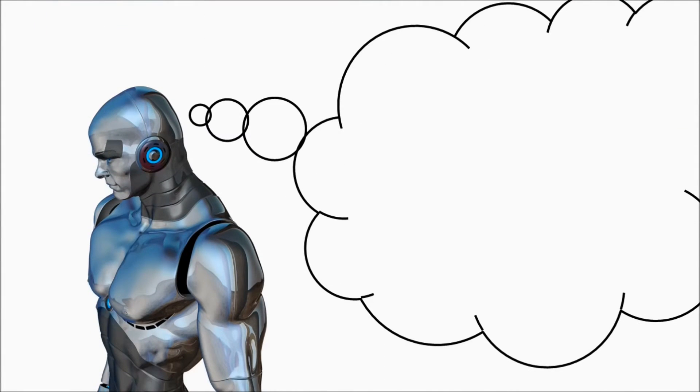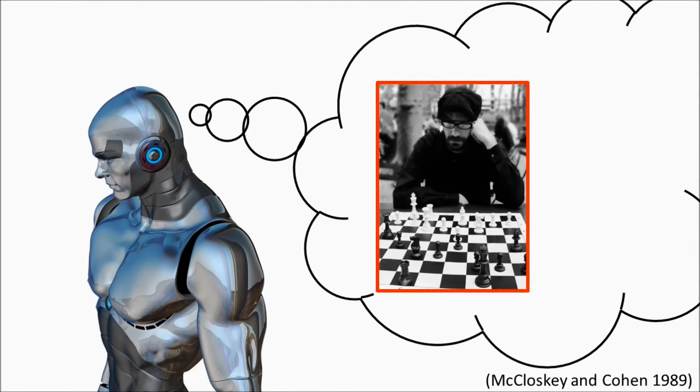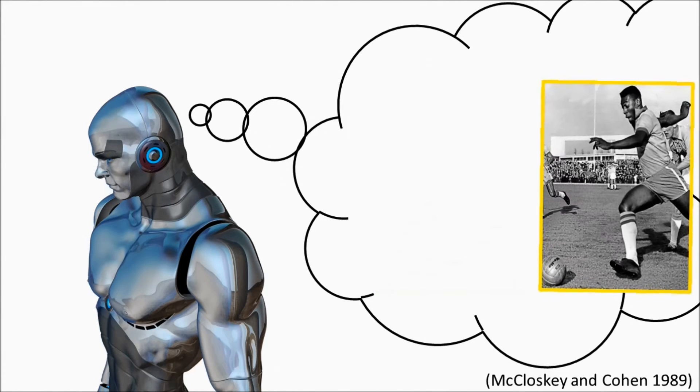Robots and computers, however, behave differently. They suffer from what's called catastrophic forgetting, which means that when one skill is already known, it is lost rapidly as a new skill is learned.